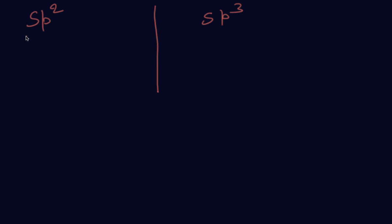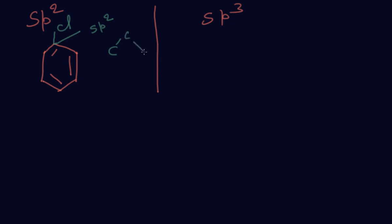SP2 means the halogen atom is attached directly on the double bond. For example, in chlorobenzene, chlorine is attached directly to the double bond of the benzene ring. This carbon bearing chlorine has one sigma, two sigma, and three sigma bonds, so this carbon is SP2 hybrid. Halogen atom attached directly to the double bond is SP2 hybrid.